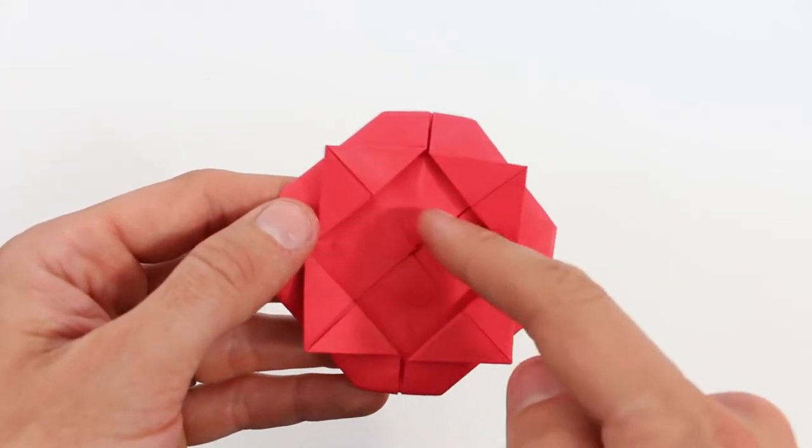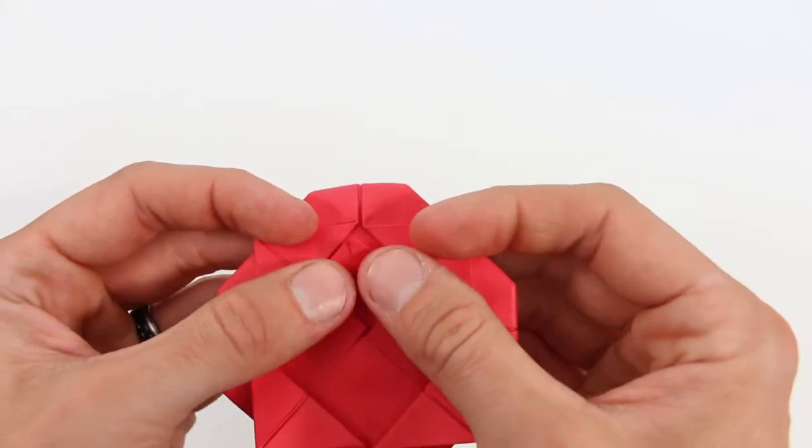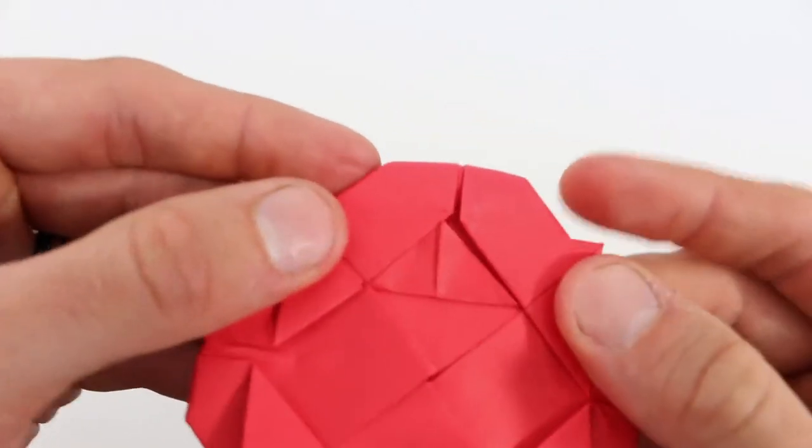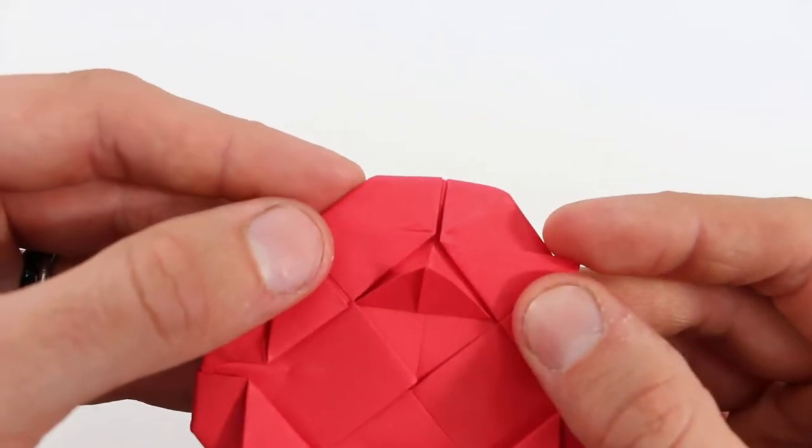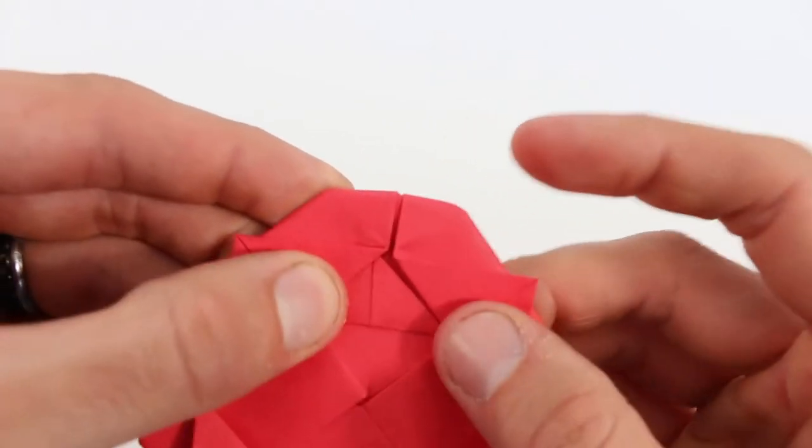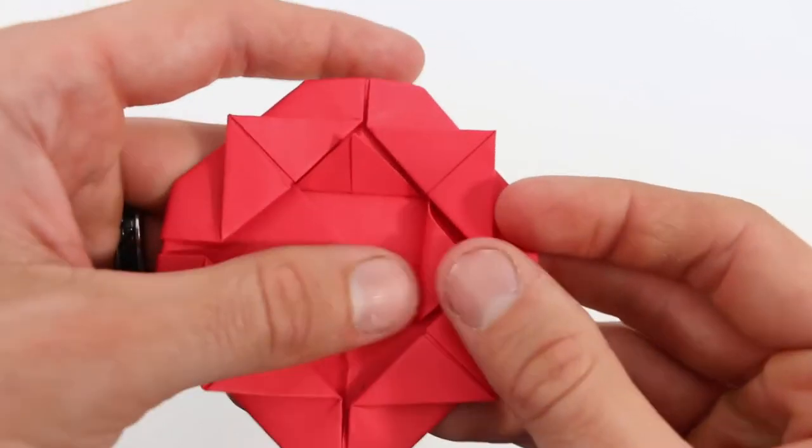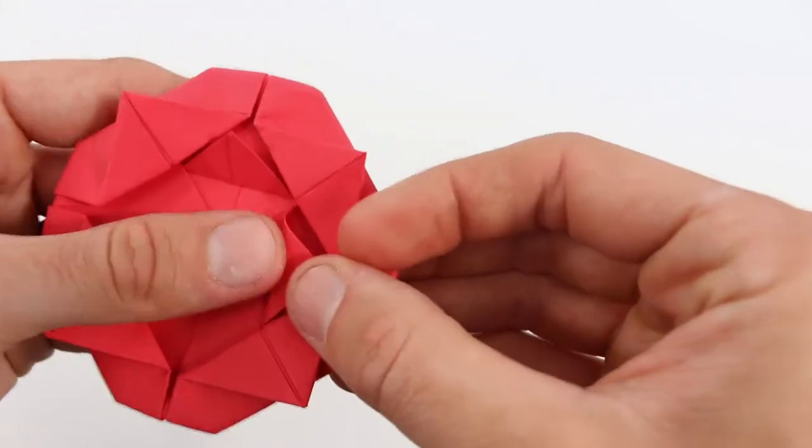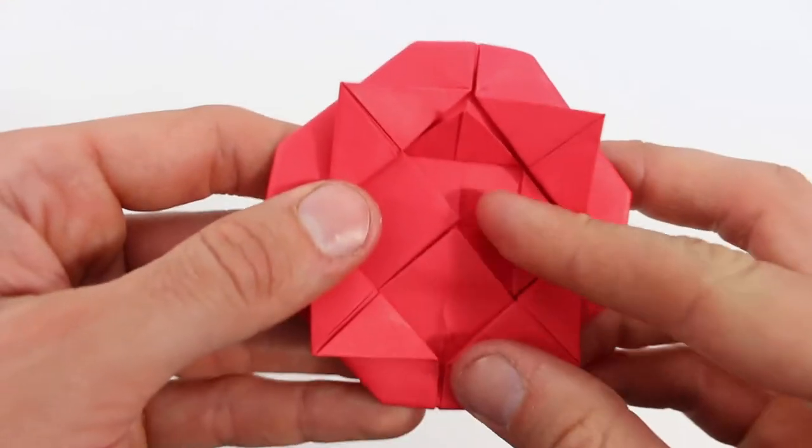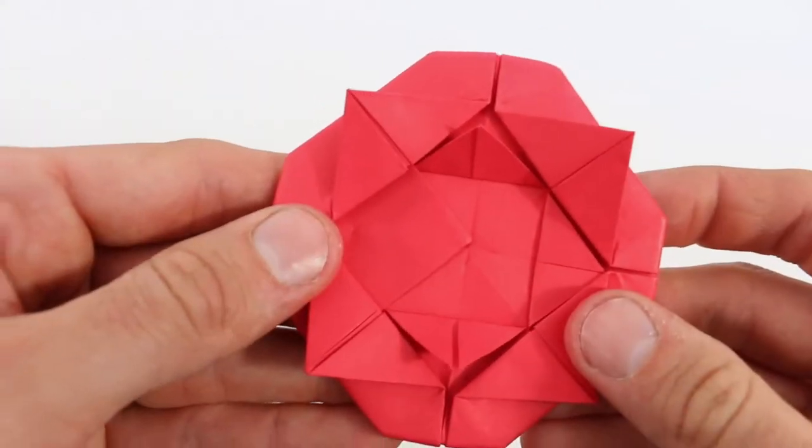Next we're going to fold out this inner layer of petals. We'll just take one of these points and fold it right out like this. The point should come right up to this point, just folding the little square in half. We'll do that on the next one, and the bottom one, and then one more.